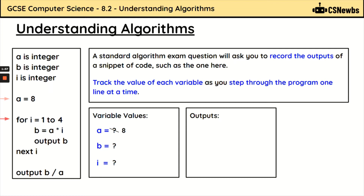Now we're entering a for loop: for I equals 1 to 4. So we're going to repeat the two indented lines four times, and I is going to start at 1 until it gets to 4, so I is now 1. The next line is B equals A multiplied by I. A is 8 and I is 1, so 8 times 1 is 8 — B is equal to 8. The next line is output B, so we output 8. It just says output B, so we output the value.